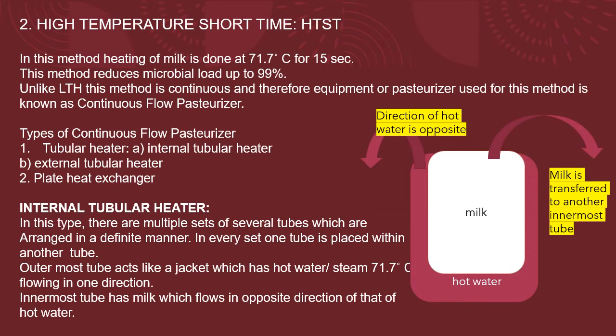The second method is High Temperature Short Time, written as HTST. In this method, heating of milk is done at 71.7°C for 15 seconds. This method reduces microbial load by up to 99%, which is why it is widely used. Unlike LTH, this method is continuous, and therefore the equipment used is known as a continuous flow pasteurizer.